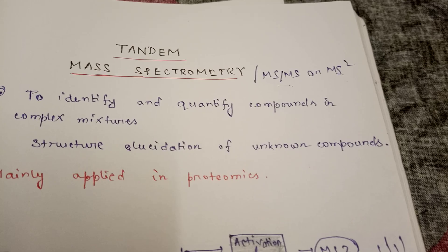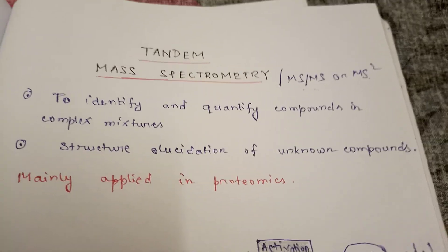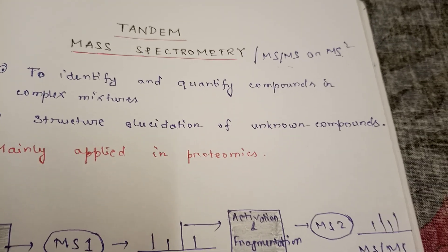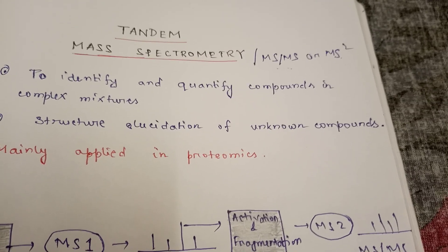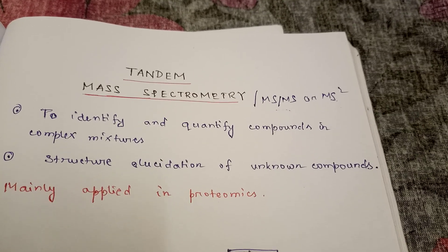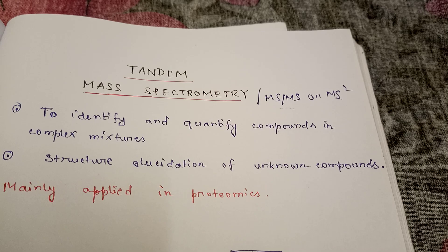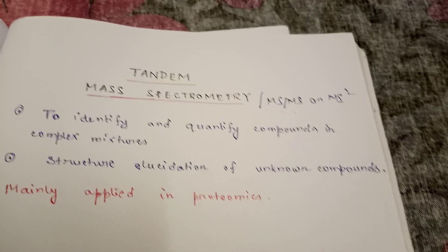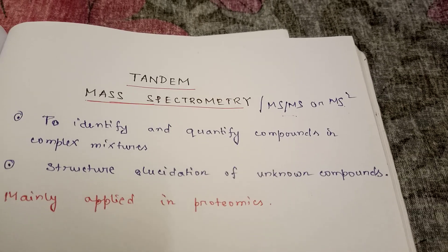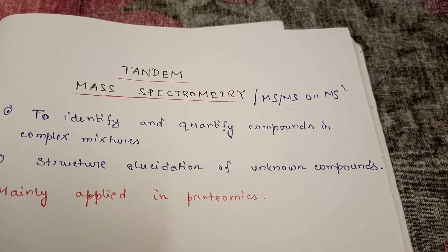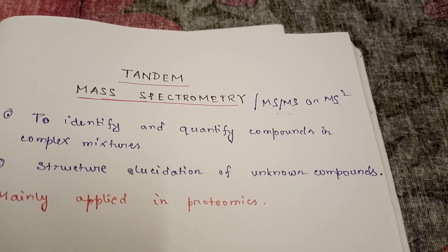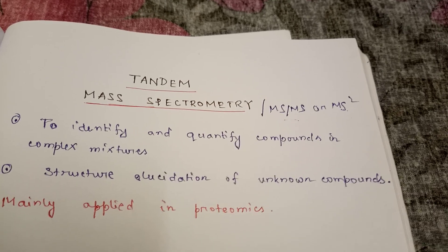To know the mass of some unknown compound, we do mass spectrometry. Now if the protein is very large, it will be difficult to get the exact mass of that protein by just doing mass spectrometry just once. So it needs to be done twice or more than twice. That's why we use tandem mass spectrometry, or MSMS, or MS squared. Mainly for protein sequencing of big proteins, we naturally perform this.